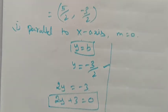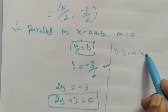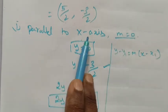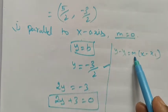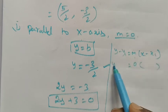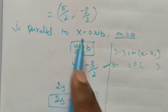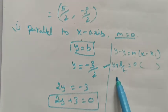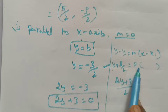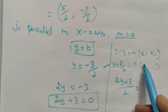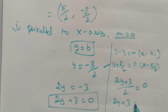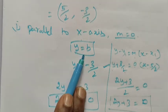Alternatively, using point-slope form: y - y1 = m(x - x1). Since the line is parallel to the x-axis, slope m = 0, so the right-hand side becomes 0. With y1 = -3/2, we get y + 3/2 = 0, which gives 2y + 3 = 0. The x-value is irrelevant since 0 times any number is 0. Both methods confirm the equation 2y + 3 = 0.